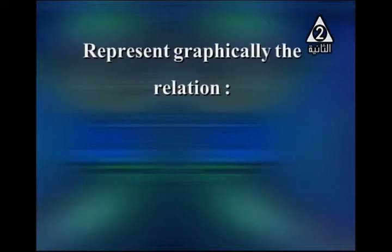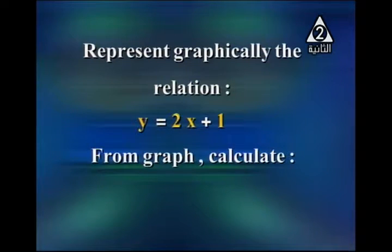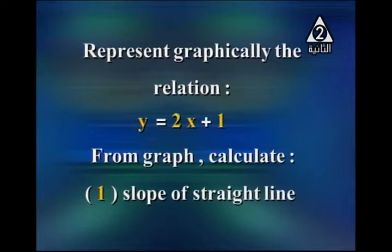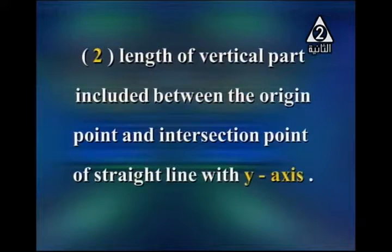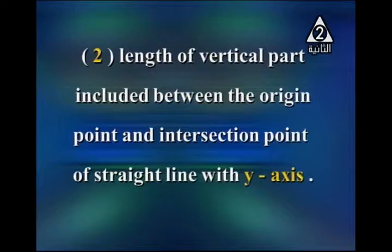First of all, we want to represent graphically the relation y = 2x + 1, and from the graph try to calculate the slope of the straight line and the length of the vertical part included between the origin point and the intersection point of the straight line with the y-axis. To represent graphically any relation, we are going to plot a table.